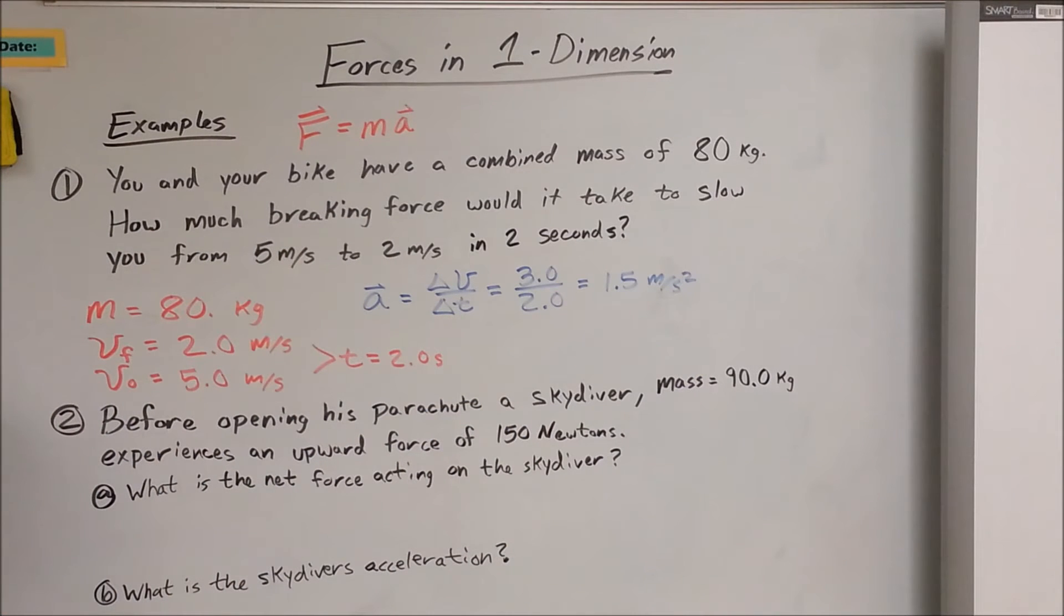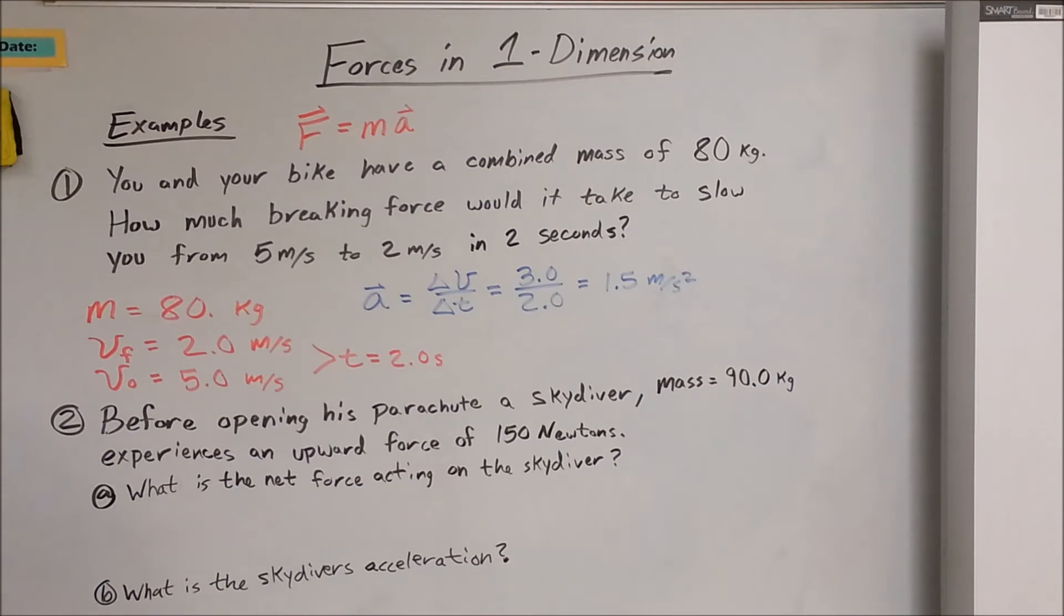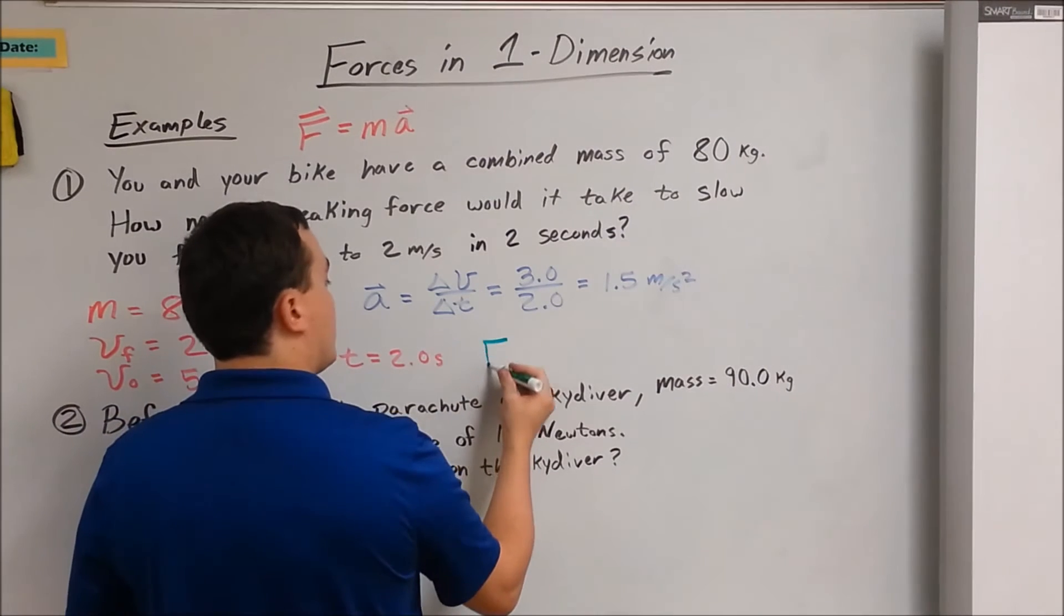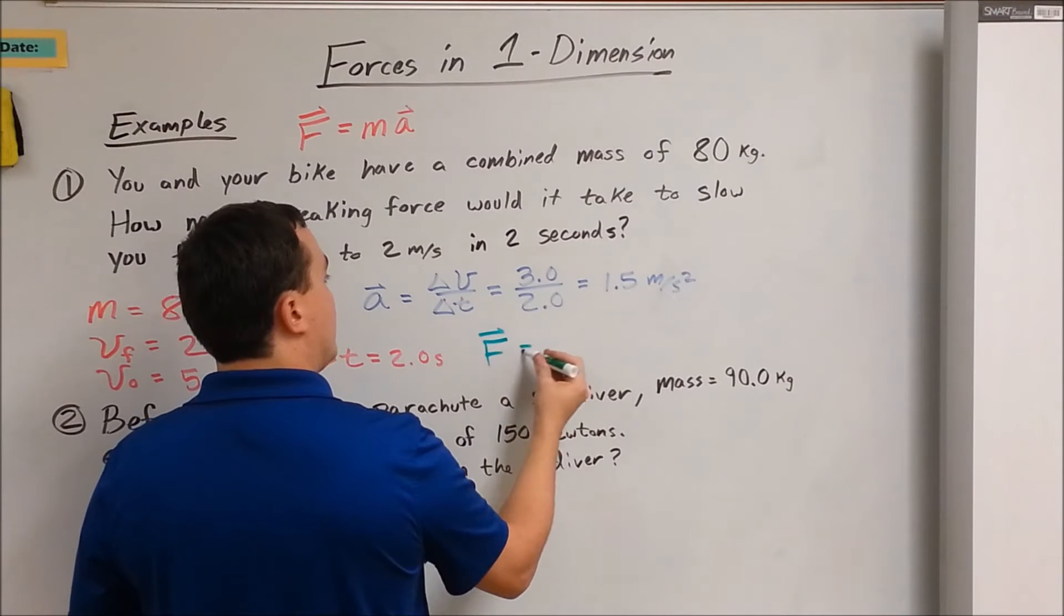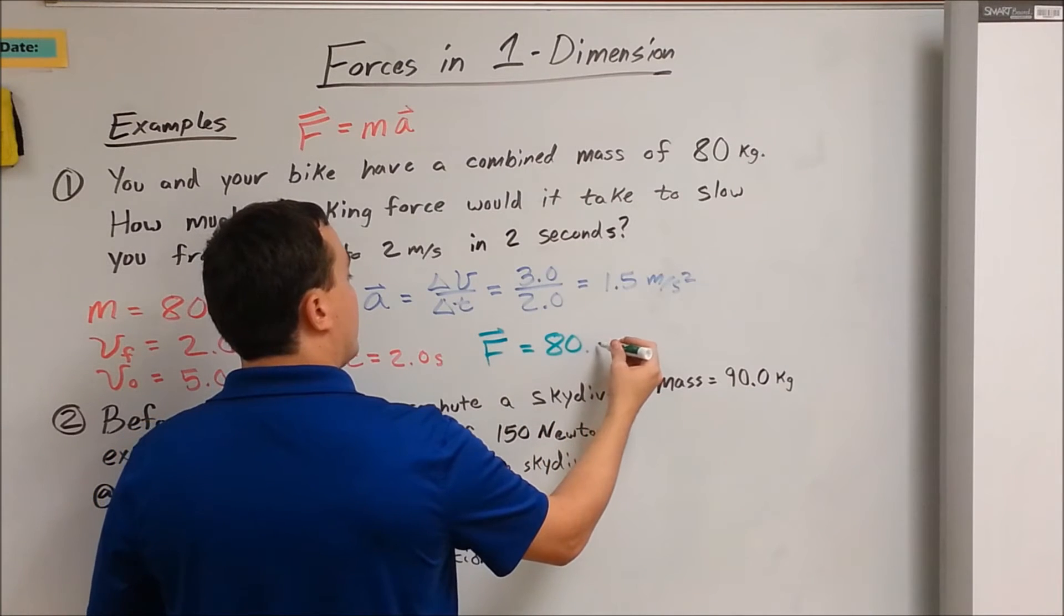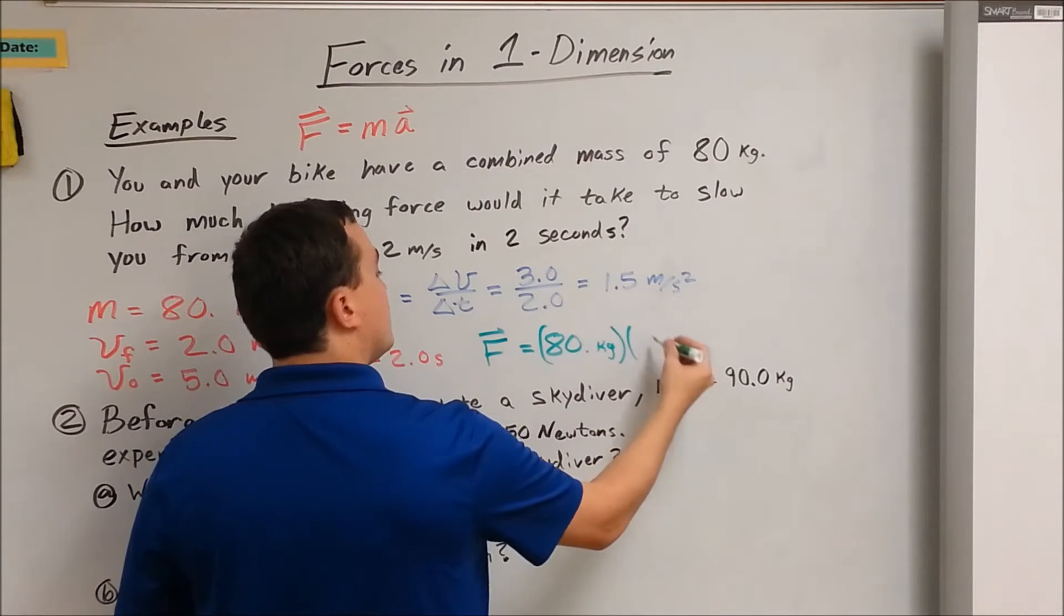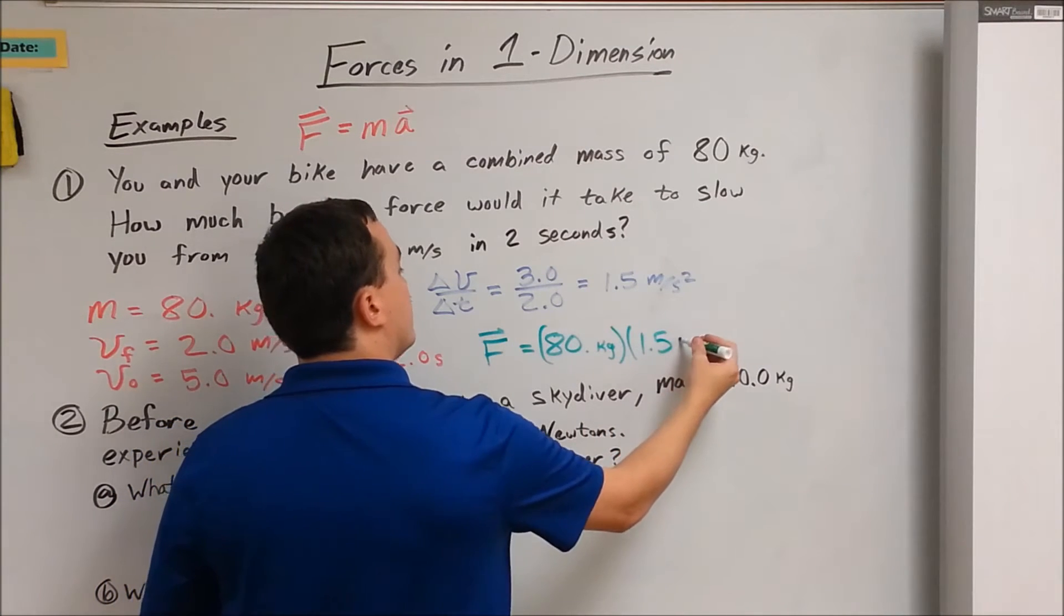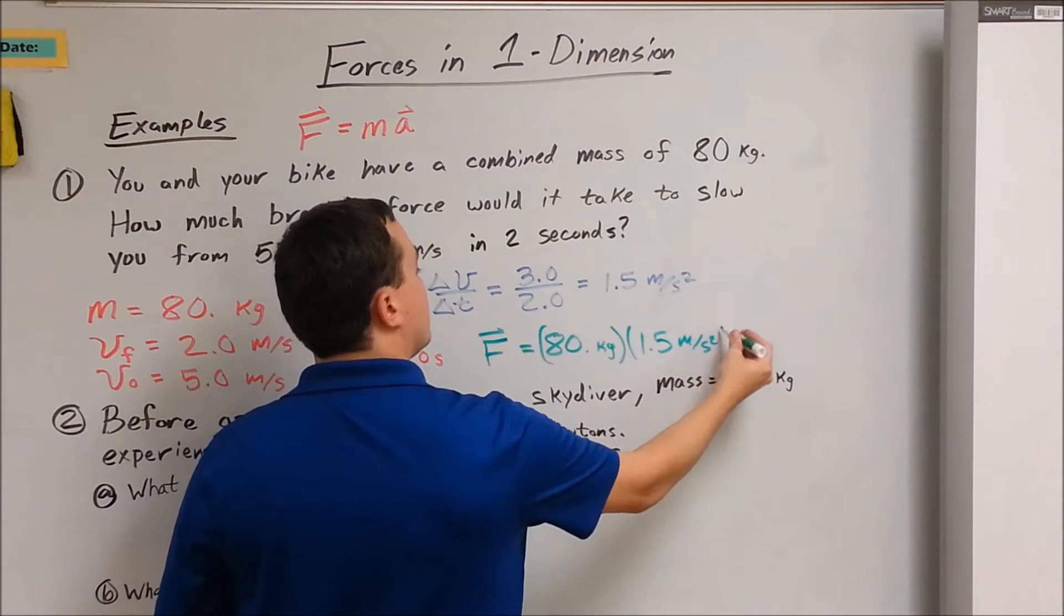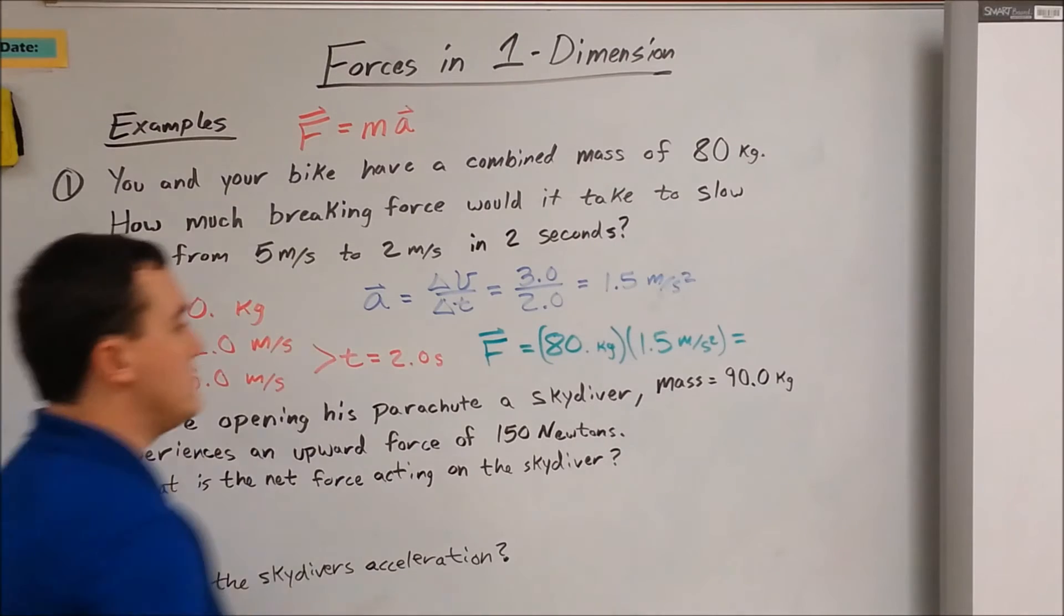Now we know our mass, so therefore we know our force. Force equals 80 kilograms times 1.5 meters per second squared, which gives us 120 newtons.